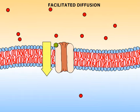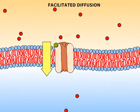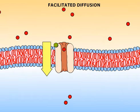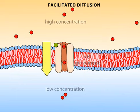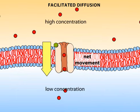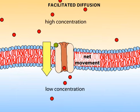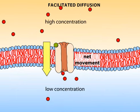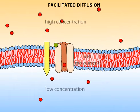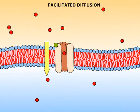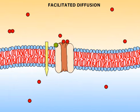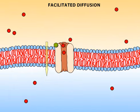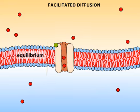In facilitated diffusion, like in simple diffusion, a substance moves from a region of higher concentration on one side of the membrane to a region of lower concentration on the other side. This movement down a concentration gradient is spontaneous and does not require energy.